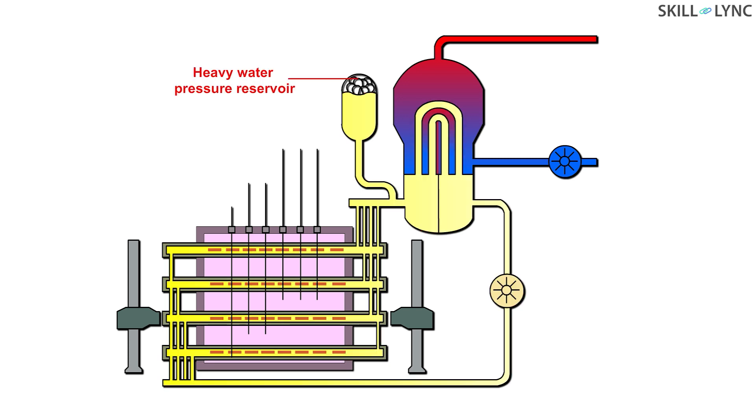The primary loop has pressurized heavy water. This heavy water is heated due to the nuclear fission in the reactor core. Since the heavy water is under high pressure, it flows over the fuel rods and can get as hot as 320 degrees Celsius without boiling.